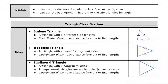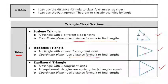The first three classifications we're going to look at are classifying by side. Within sides, we can classify a triangle as scalene, isosceles, and equilateral. We're going to use Pythagorean Theorem or the distance formula to find the lengths of the sides. If a triangle has three different side lengths, it's scalene. Two congruent sides means isosceles. Three congruent sides means equilateral.